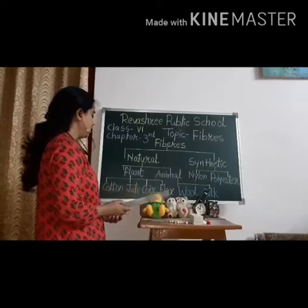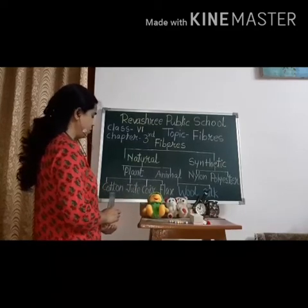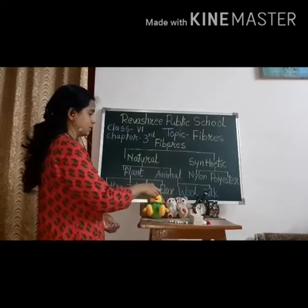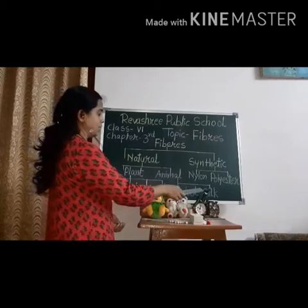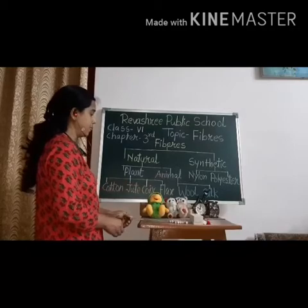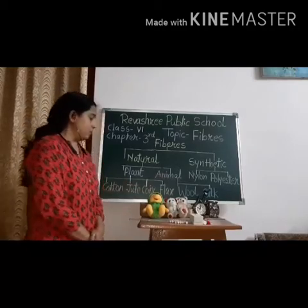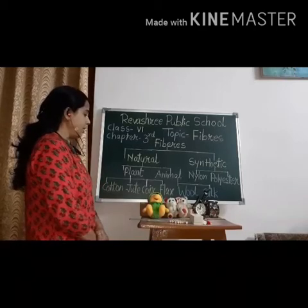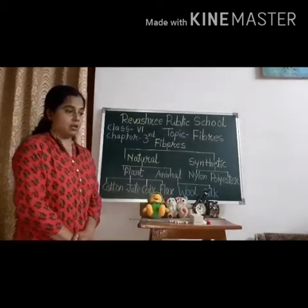From plants, we get cotton, jute, coir, and flax. From animals, we get wool and silk. In that fabric, cotton and flax are the oldest fibers.